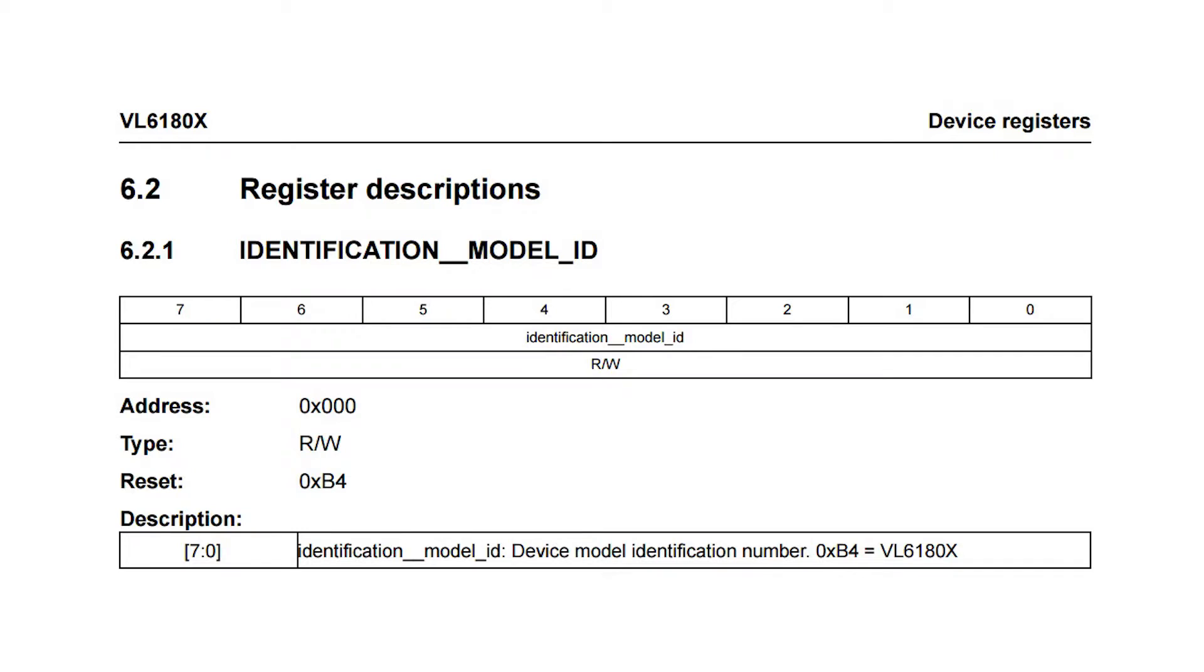Before we can program, we need to see how we communicate with the VL6080X. We read the identification model ID register that is at the address 0. We should read B4 as default value.